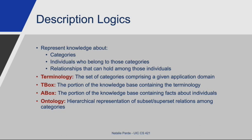You'll generally hear the set of categories comprising a given application domain referred to as the terminology, which is contained in a portion of the knowledge base called the T-box. The portion of the knowledge base containing facts about individuals is called the A-box, and an ontology is a hierarchical representation of the subset and superset relations among different categories in the domain.